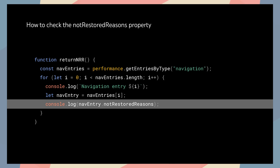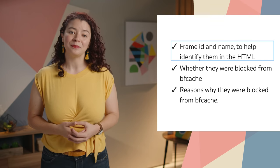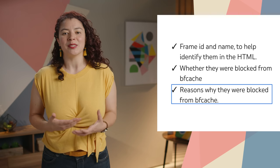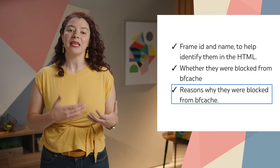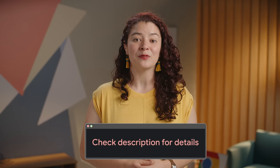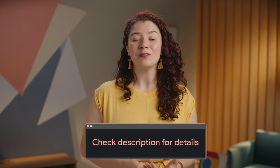To enable monitoring in the field, the PerformanceNavigationTiming class has been extended to include a NotRestoreReasons property. This returns an object containing related information on all frames present in the document, including frame ID and name to help identify them in the HTML, whether they were blocked from using the BF Cache, and the reasons why. This allows developers to take action to make those pages BF Cache compatible, thereby improving site performance. Check out the link in the description for a code sample to find out the reasons your site might not be using BF Cache, since it can give you a performance boost.